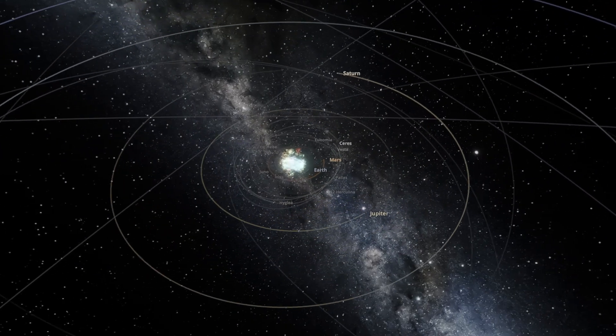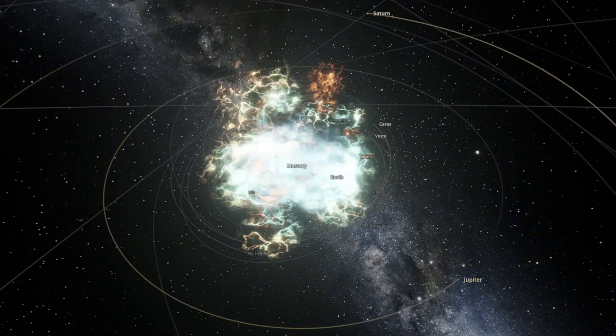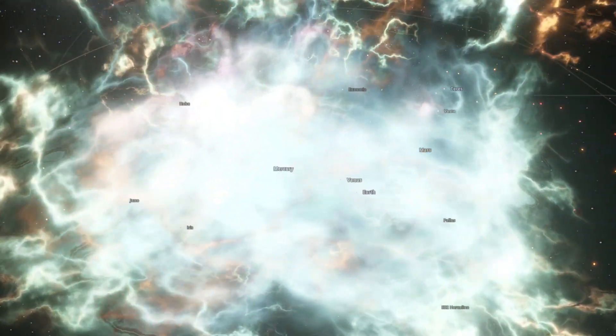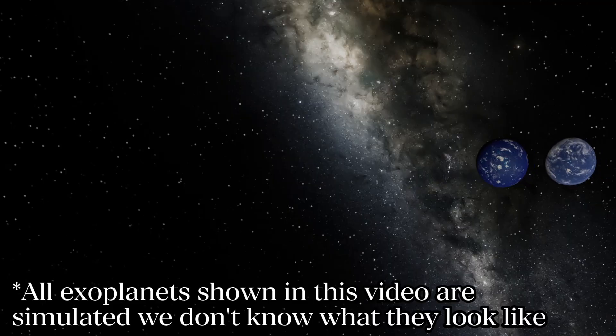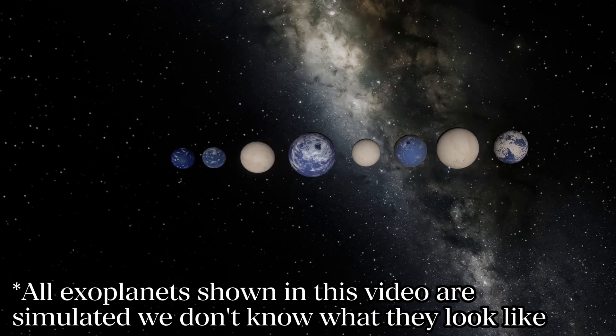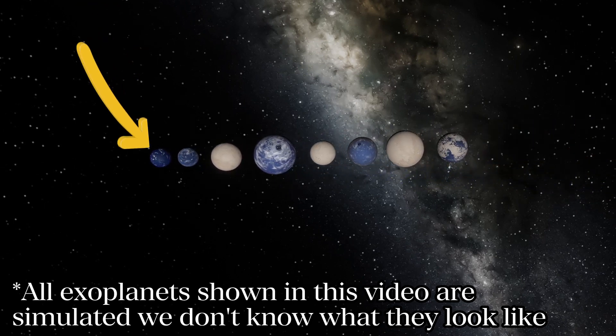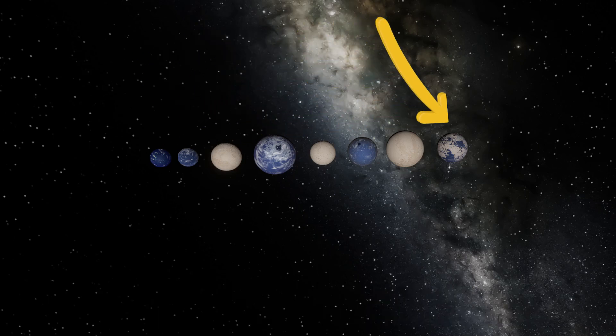Also the parent star needs to be stable. An unstable star could rip atmospheres away and this would be bad news for any budding lifeforms. So with all that out of the way, I've compiled a list of eight exoplanets here and I'm going to start with the least potentially habitable and work my way up to the most.